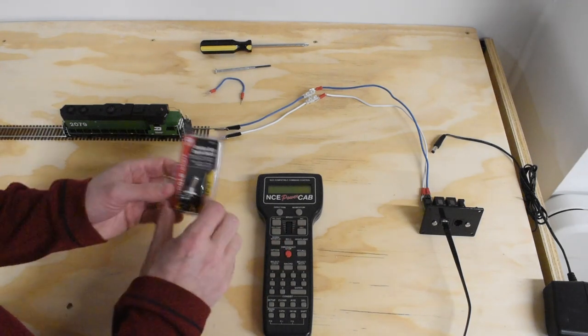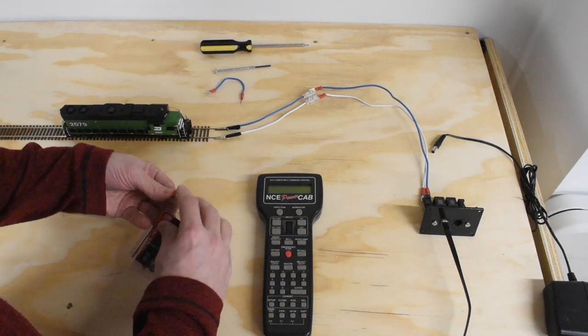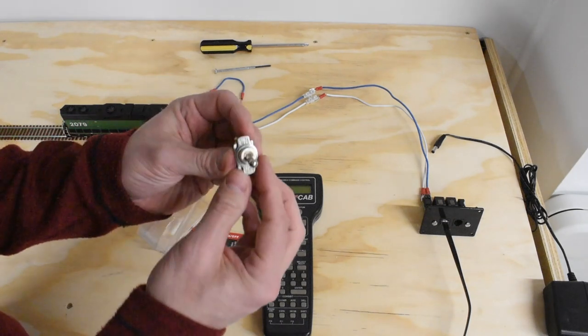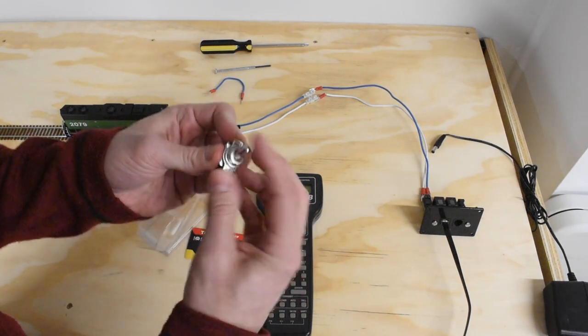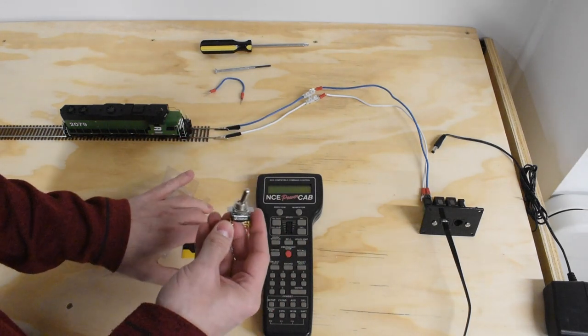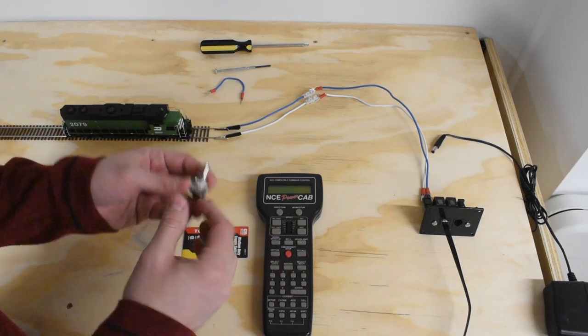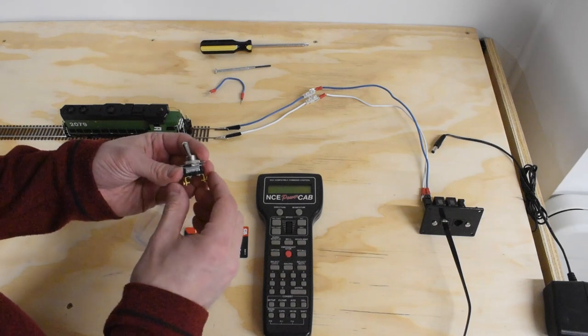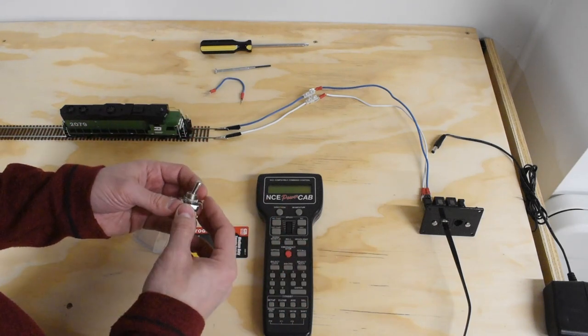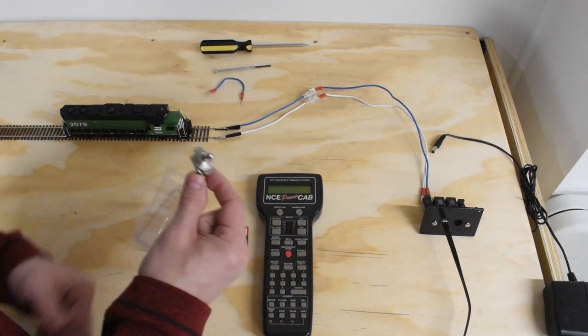What I have here is a single pole single throw switch. It's a simple on and off switch. Single pole meaning it only affects one of the poles, either positive or negative, whichever one we're going to wire up. In this case it's not really going to matter. Some applications it does matter, there's different types of switches out there.